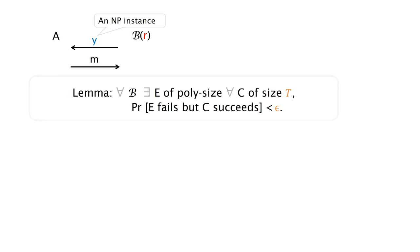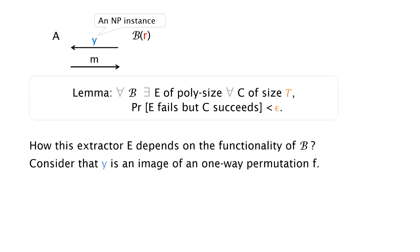So we prove that for any NP instance sampling algorithm B, we have a T-epsilon optimal extractor E. And we now give two examples to explain how the extractor E depends on the functionality of B. We consider that Y is an image of one-way permutation F.